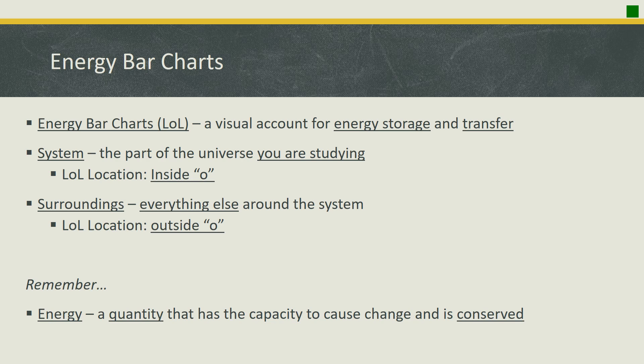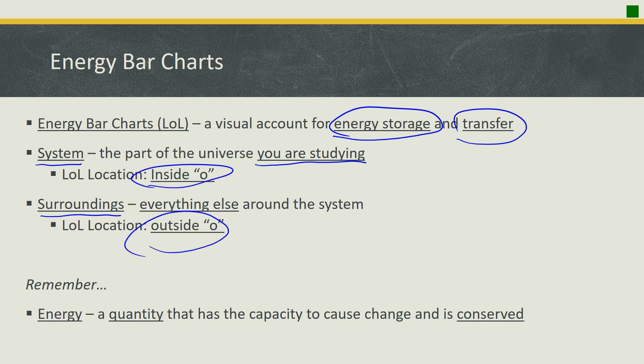We're also going to be talking about energy bar diagrams, which I'll refer to as LOL diagrams — you'll see why in a few slides. Basically, they account for where energy is stored during a phase change or chemical change and where it is transferred to. To use them, you need to identify the system — the part of the universe you are currently studying — and the surroundings, which is everything else. In the LOL diagram, the system is inside the O and the surroundings are outside the O.